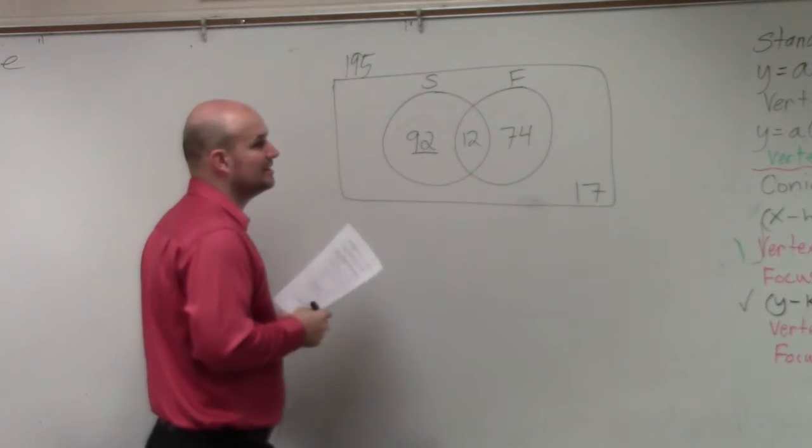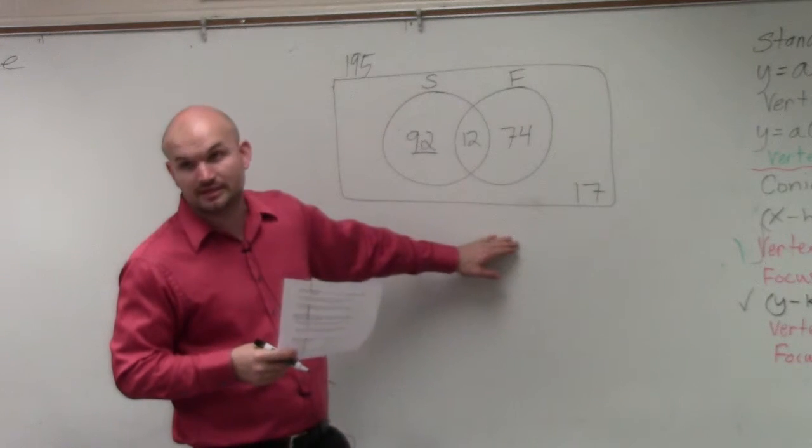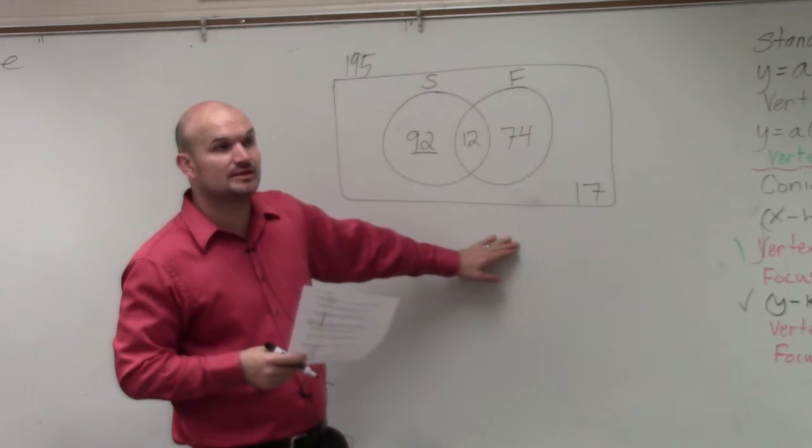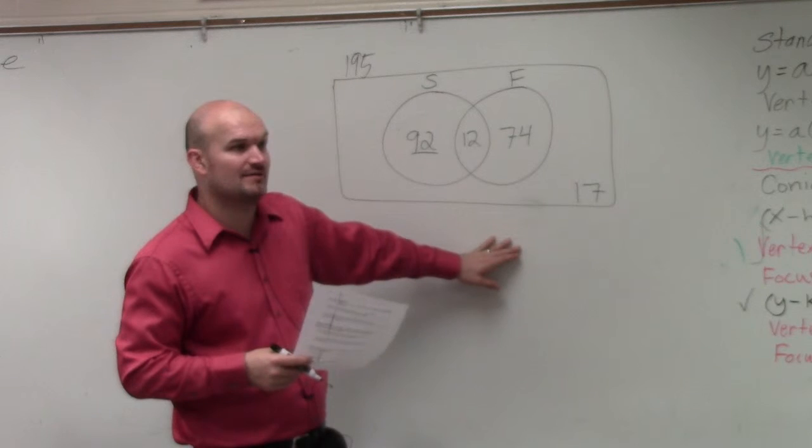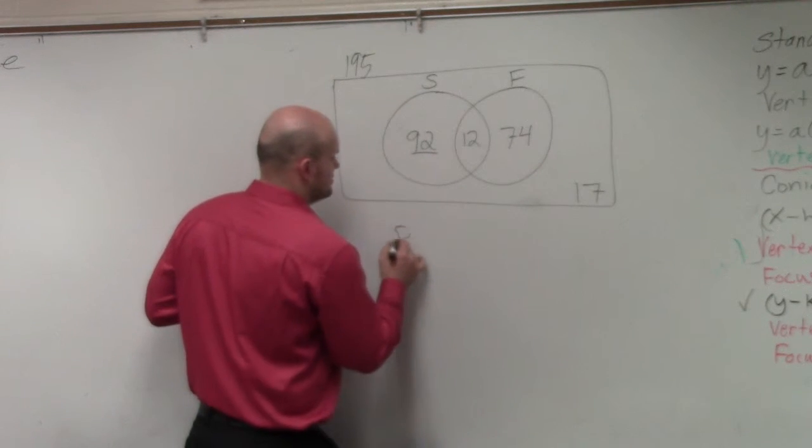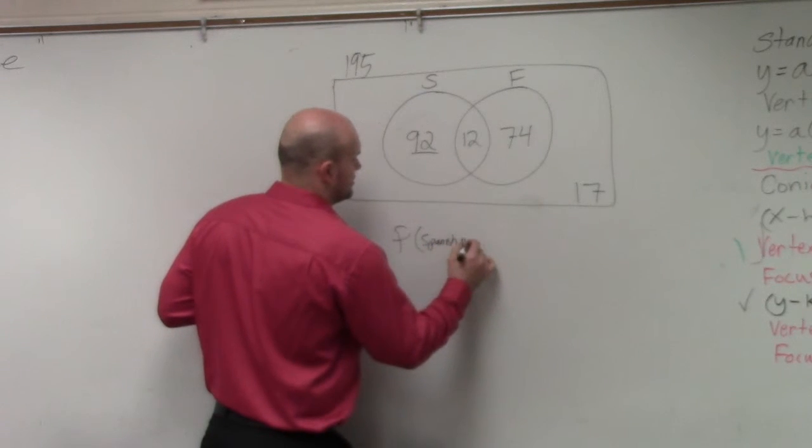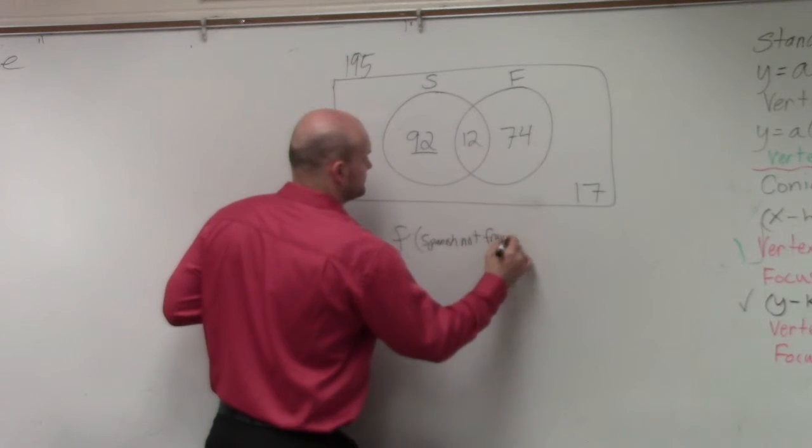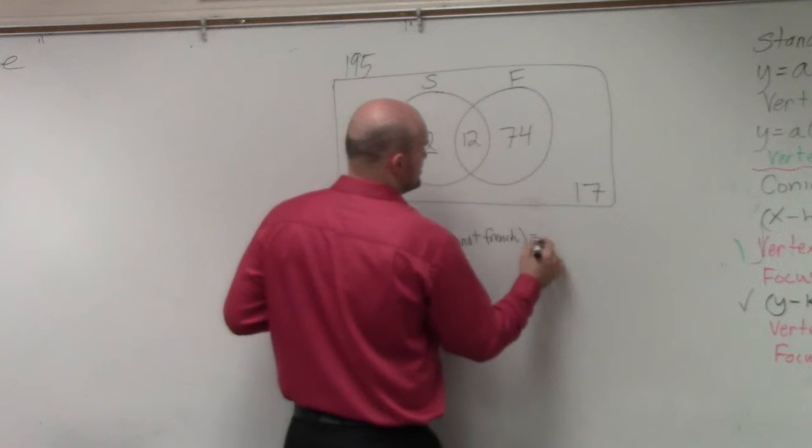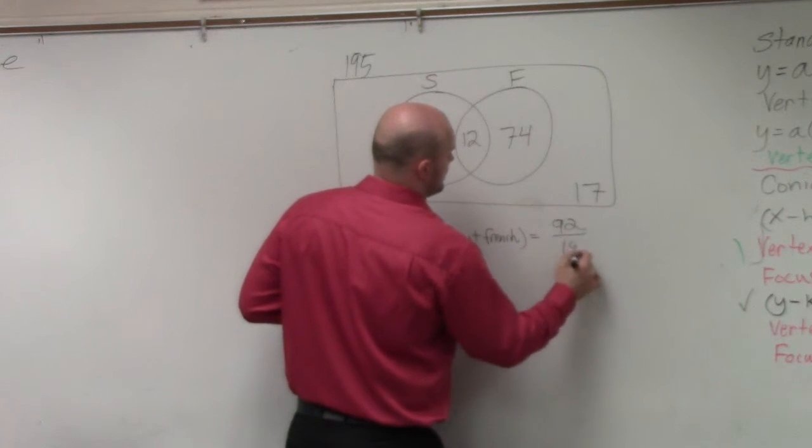Remember, theoretical probability is the number of outcomes over the equally likely number of outcomes. Well, how many equally likely outcomes do we have? How many students do we have? 195. So the probability of Spanish, not French, is going to be 92 over 195.